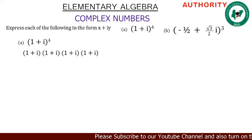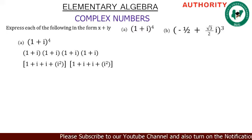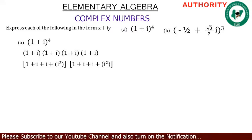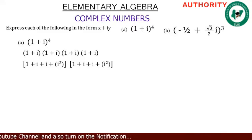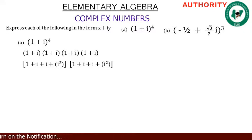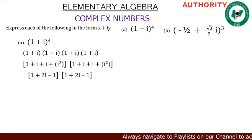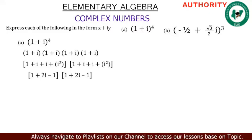Opening the first two brackets, we get: 1 times 1 is 1, then 1 times i is i, then i times 1 is i, then i times i is i squared. Opening the other two brackets: 1 times 1 is 1, 1 times i is i, i times i is i squared. So we have 1 + i + i giving us 2i, and i squared is minus 1, so we have 1 + 2i − 1. The other bracket gives the same: 1 + 2i − 1.